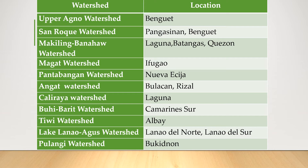Second, proper waste disposal — throwing garbage everywhere will not only pollute water resources but also contaminate water quality. Third, save water at home — water flows directly into our homes, so the best way to conserve water starts with us. For example, fix faucets with leakage, turn off the faucet after use, don't play with water, and collect rainwater for cleaning and watering plants.